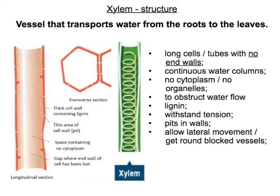This is the structure of the xylem; it's adapted to be able to transport water in several ways. First of all, it's a continuous tube — there are no cross walls between the cells; the cells are in fact dead. So there's no cell walls, no cytoplasm, and no organelles inside the tube to obstruct the flow of water.